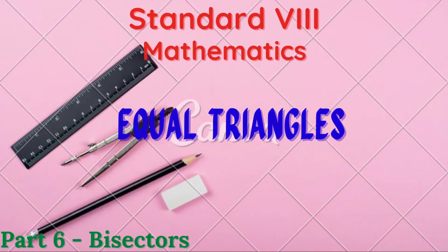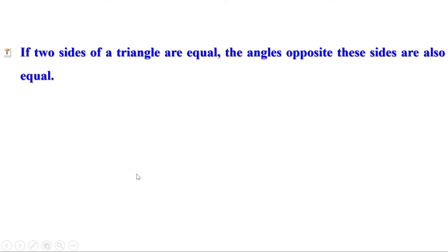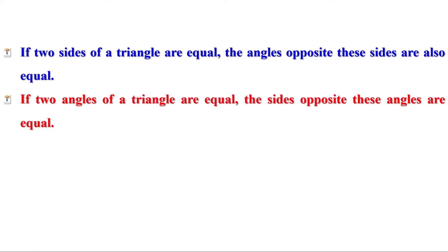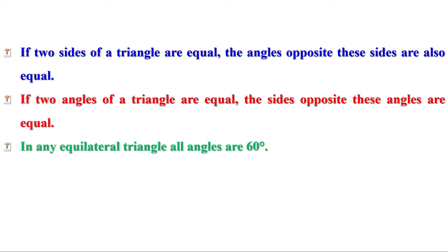Welcome to Maths Companion. I am Damesh. In the last video, we discussed isosceles triangles. Let us recall what we learnt in the last class. If two sides of a triangle are equal, the angles opposite these sides are also equal. If two angles of a triangle are equal, the sides opposite these angles are equal. In any equilateral triangle, all angles are 60 degrees.